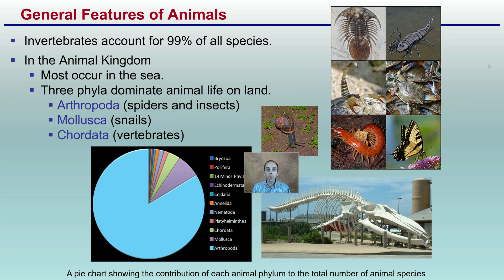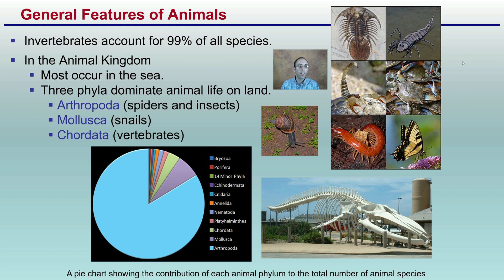General features of animals: invertebrates account for 99% of all species in the animal kingdom, and most occur in the sea. Three phyla dominate animal life on earth: arthropoda, mollusks, and chordates. Arthropoda is by far the greatest. Just be mindful that 1% of those vertebrates — those chordates — are a very, very small total amount of species.